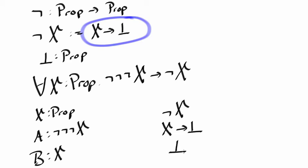And now we need to give a proof of false. Now as I said, false is a proposition that doesn't have a proof. So it looks like we may be in trouble here.